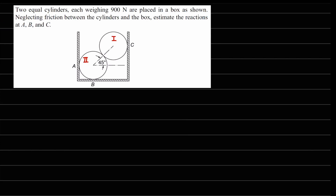If you look at point A on the cylinder, we expect a force in the normal direction — let's call this FA. At point B we get FB, at point C we get FC, and at the contact point between the two cylinders there will be an interaction force, let's call this FD. On cylinders one and two, this force is directed towards the center.